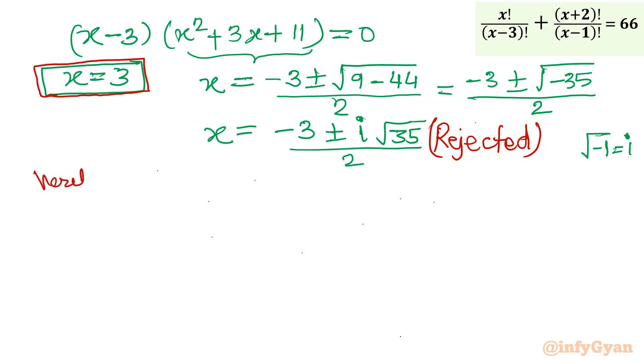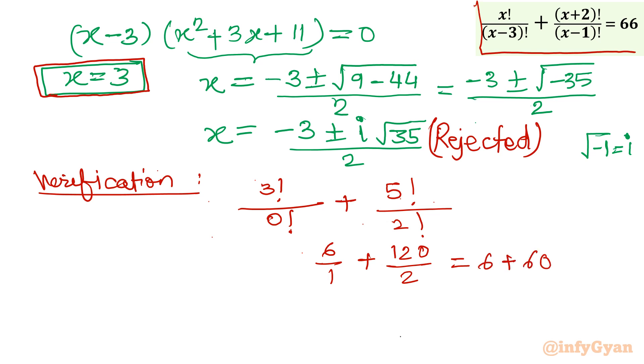Now let's verify this value. Let me put here x equal to 3. So 3 factorial over 3 minus 3, 0 factorial, plus 3 plus 2, 5 factorial over 3 minus 1, 2 factorial. We have to check whether we are having 66 or not. So 3 factorial is 6, 0 factorial is 1, 5 factorial is 120, 2 factorial is 2. So this is 6 plus 60, that is 66, which is our right hand side. That means x equal to 3 is our solution. I hope you like this video.